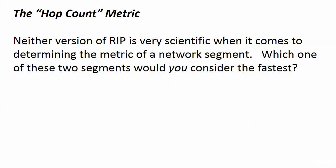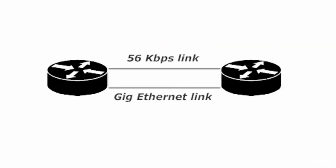Now let's talk about that hop count, because this is the first time you've seen it. Neither version of RIP is very scientific when it comes to determining the metric of a network segment, because the hop count is the only thing it understands. You and I could look at a gigabit Ethernet link and a 56k link and say the gigabit link is a little bit faster. But the problem is RIP — or any distance vector protocol — considers these two links to be the same speed. It's one hop; it's the same metric to RIP. Distance vector protocols by default are just going to use that hop count.